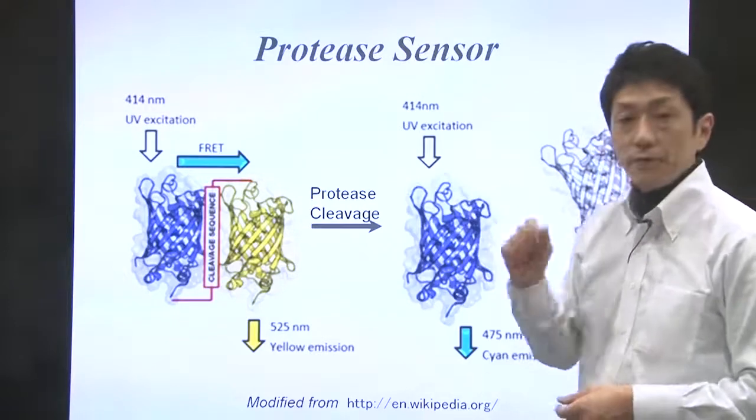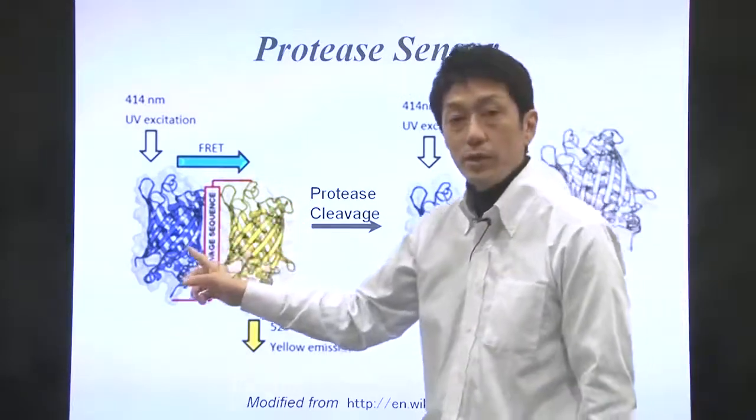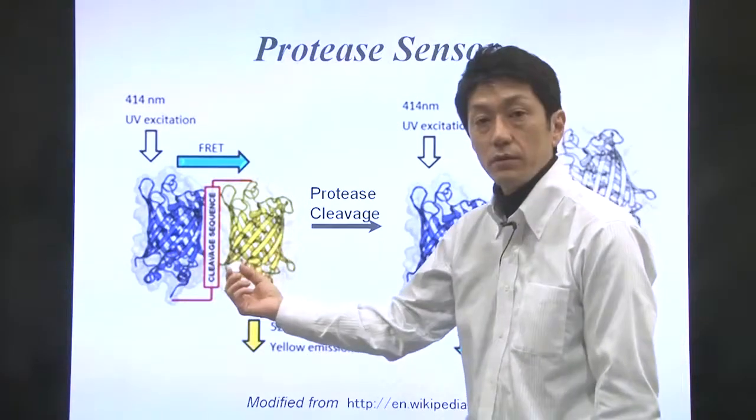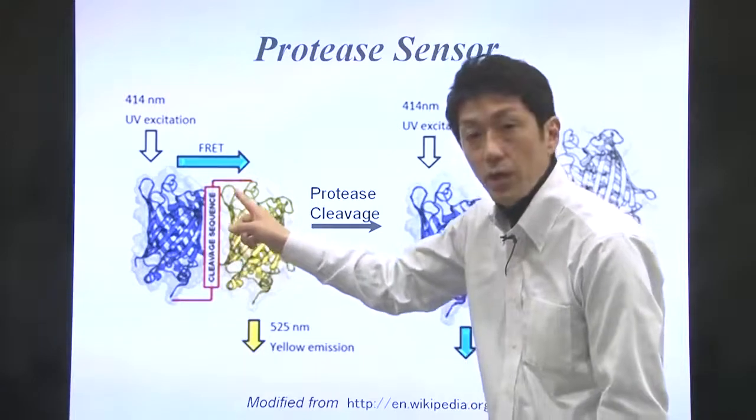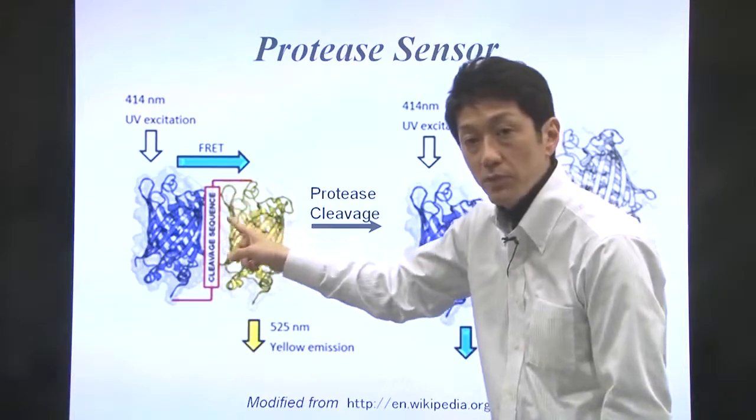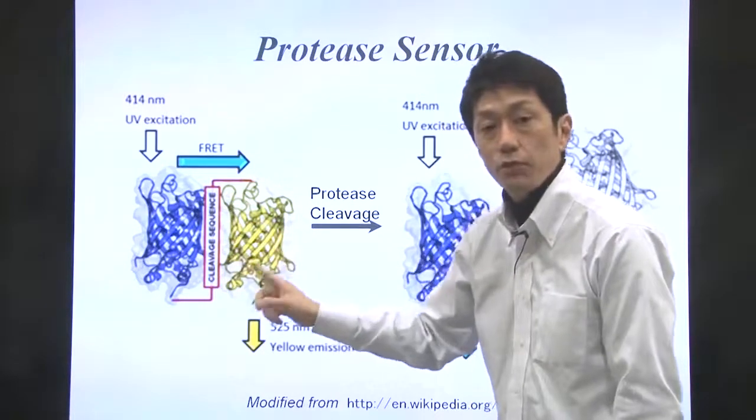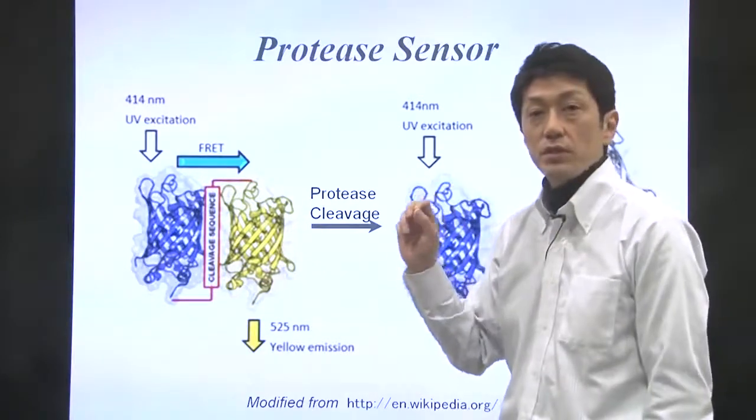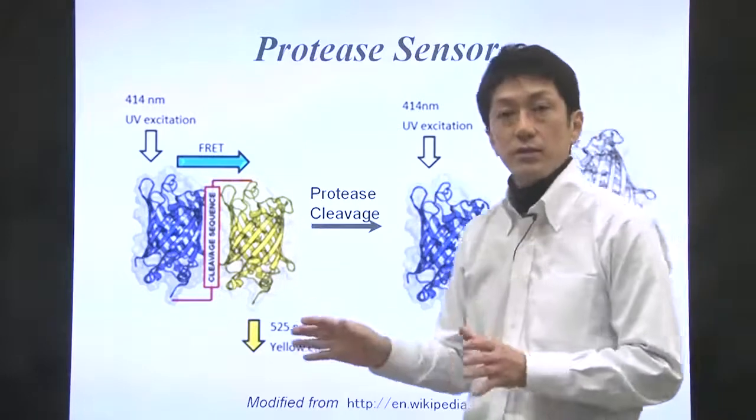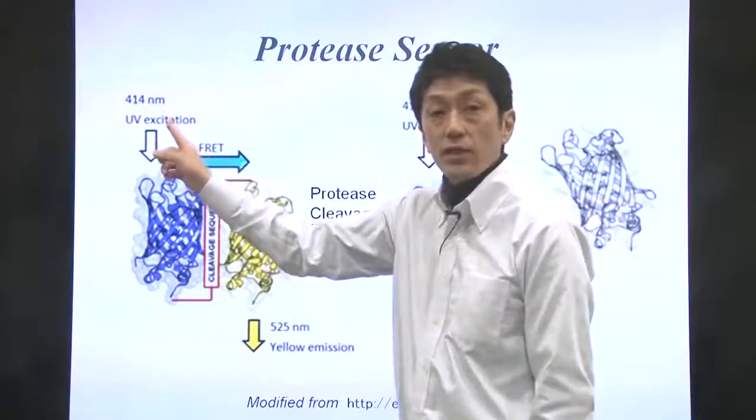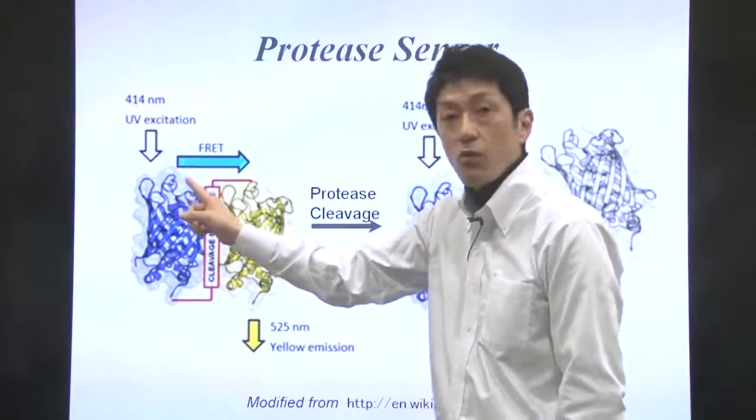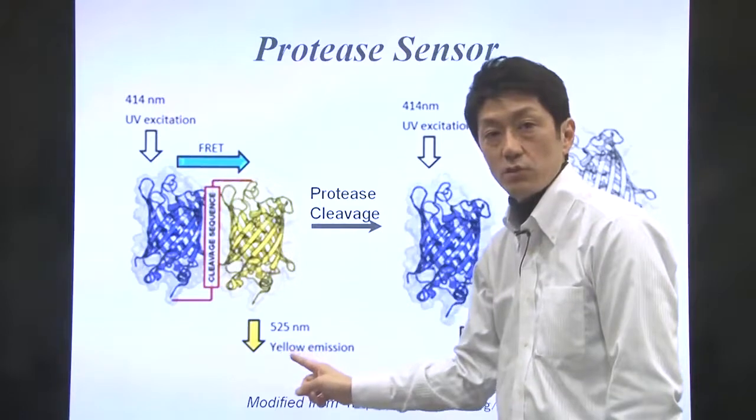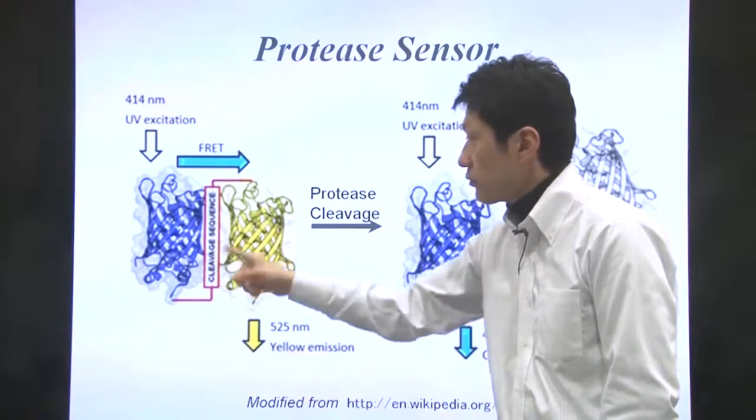In this design, CFP and YFP are connected through the peptide substrate of a protease of interest. First, when the protease is inactive or absent, UV excitation is converted to yellow fluorescence emission because of FRET.